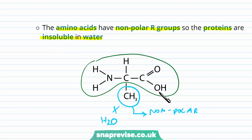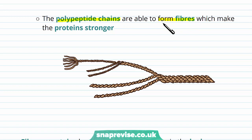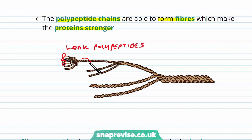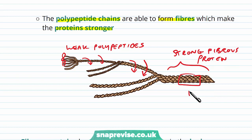Another common feature is that the polypeptide chains are able to form fibers, which makes the proteins very strong. The individual polypeptides are like the strings of a rope if we unwind the rope to its smallest level — individually they are quite weak. But as we wind them together in various layers, what we end up with is a strong fibrous protein. We call this unit where multiple polypeptides are wrapped around each other a fiber, and these are very tough.